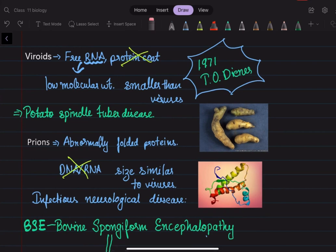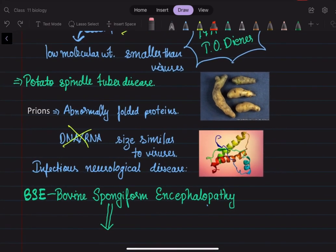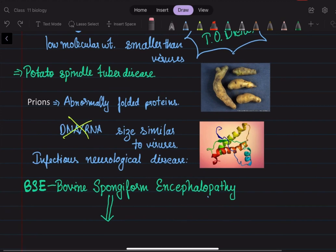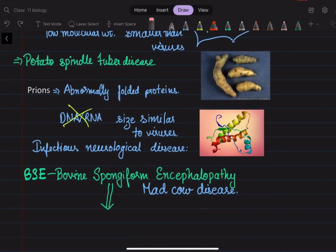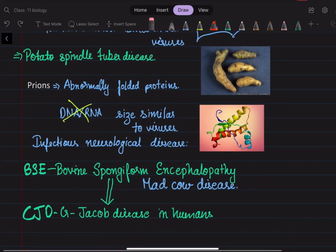They are famous for causing infectious neurological diseases. One famous example is bovine spongiform encephalopathy, or mad cow disease - a neurological disorder in cattle. The equivalent disease in humans is called Creutzfeldt-Jakob disease.